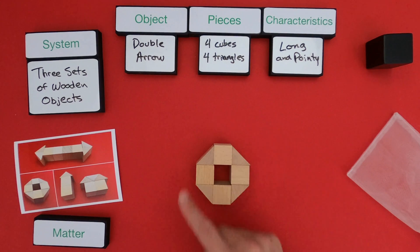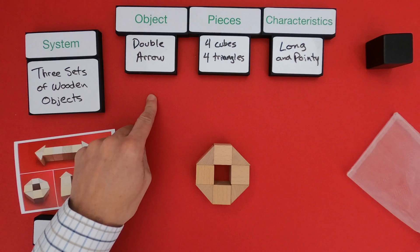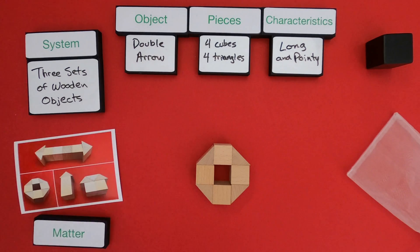Okay, so the next object, I would call this an octagon. So let me do the same thing. I'm going to go through, write down the name of the object, the pieces, and the characteristics.